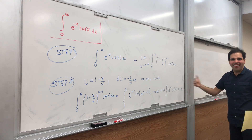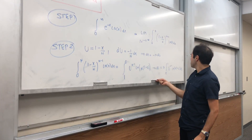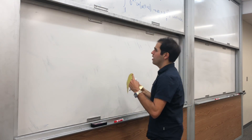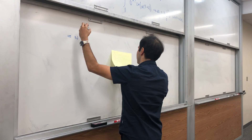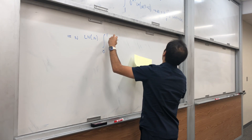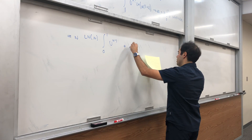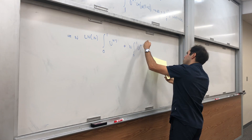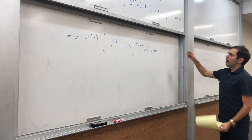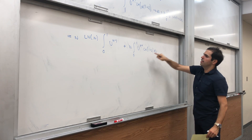And now you want to expand out this ln — and it turns out you can here. So this equals n times ln of n times the integral from 0 to 1 of u to the n minus 1 du, plus n times the integral from 0 to 1 of u to the n minus 1 times ln of (1 minus u) du. Here I just used that ln of n times (1 minus u) equals ln of n plus ln of (1 minus u).